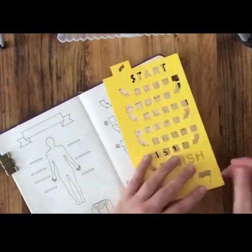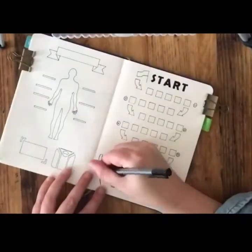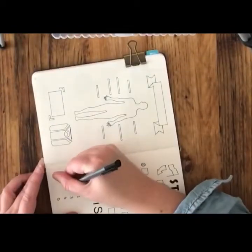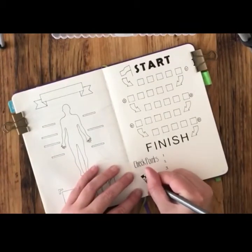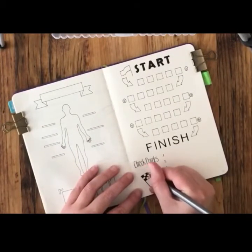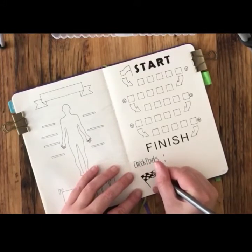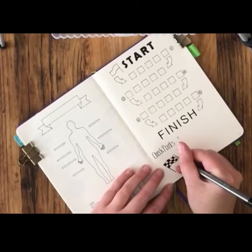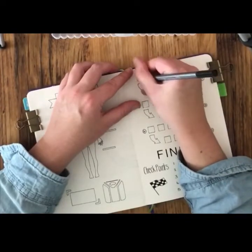I'm just adding in a finish flag at the top and the bottom of the page, and I'm going to checker those just to go along with the kind of race theme. Adding in that checker detail there and again to the top.